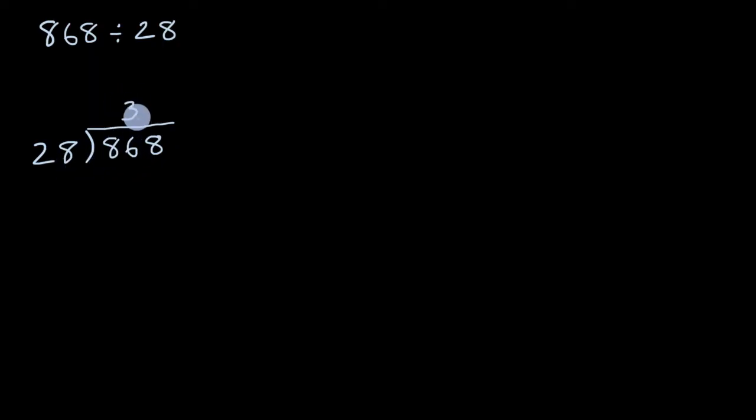Let me put a three there and let's figure out what three times 28 is. Three times eight is 24. And then three times two is six plus two is eight. Looks like I did that right, I just got right below it, I didn't go over it. And so here, 86 minus 84 is two.